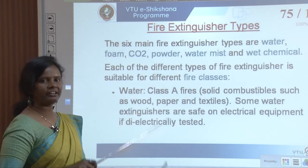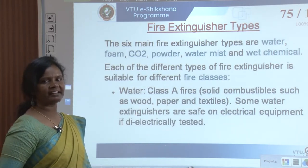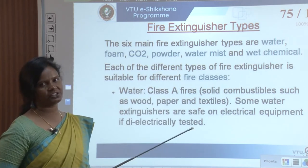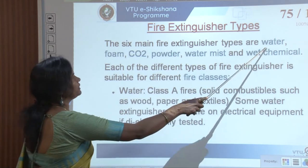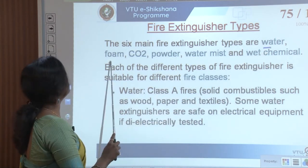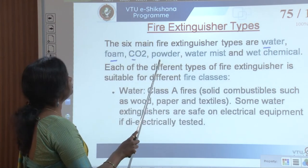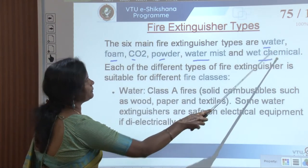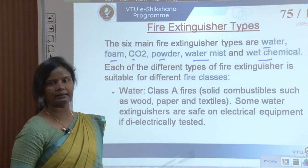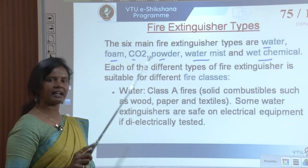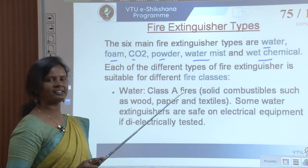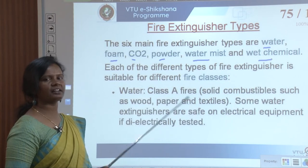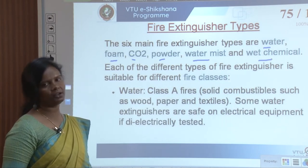There are six main types of fire extinguishers based on the agent used: water, foam, CO2, powder, water mist, and wet chemical. These six types of agents are used in particular extinguishers based on the requirement.